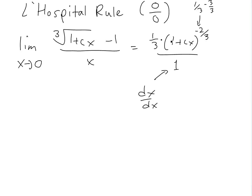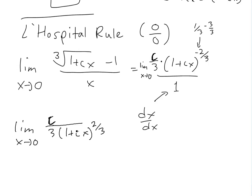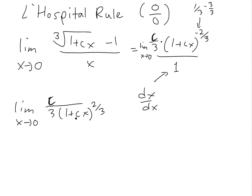We can rewrite this with the negative exponent moved to the denominator: we get c/3 divided by (1 + cx)^(2/3). Now we plug in x = 0 — there's no 0 over 0 anymore. We get c divided by 3 times 1, which equals c/3. So L'Hôpital's rule confirms our answer.